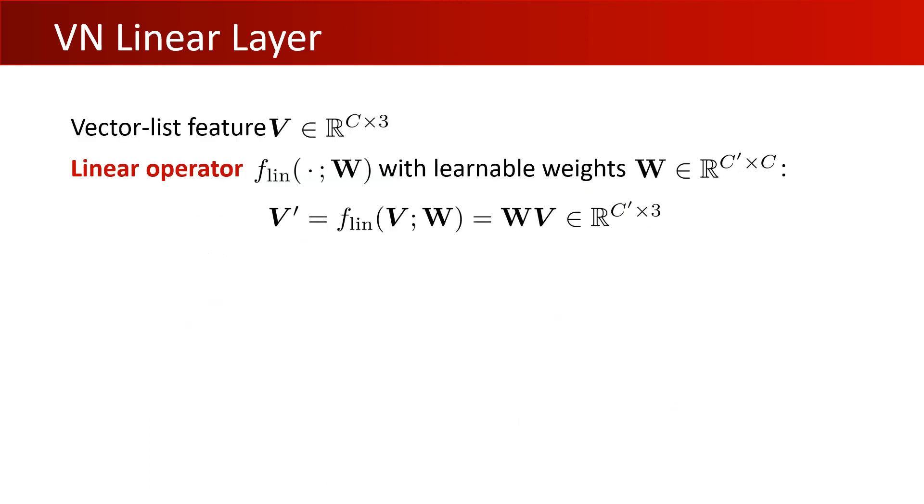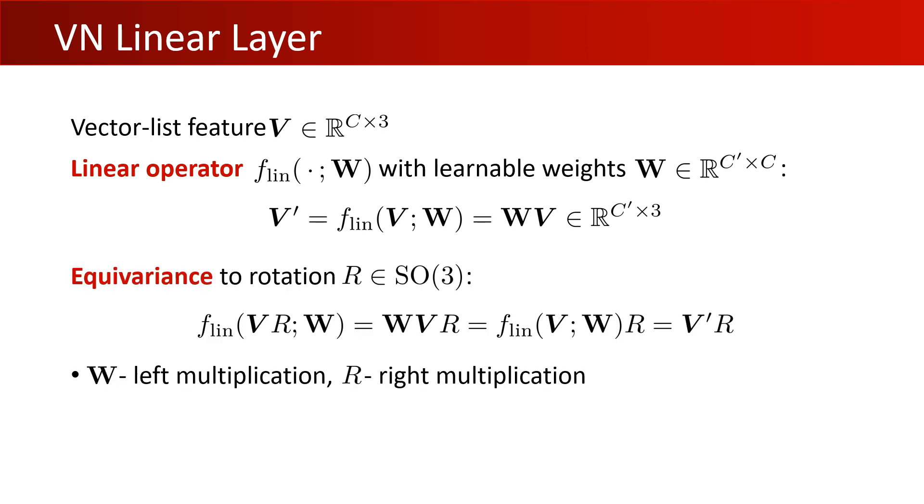We begin by introducing the linear operator. Given the vector-list feature V in R^{C×3} and the weight matrix W in R^{C'×C}, we define the linear operation as directly multiplying W from the left, which gives a C' by 3 output. The equivariance property of this operation is easy to verify, as it commutes with any rotation matrix R multiplied from the right. Note that we omit a bias term as an addition of a constant vector could interfere with equivariance.